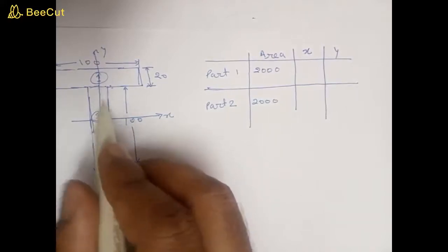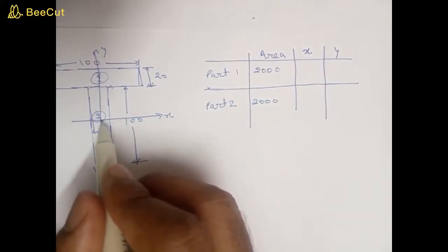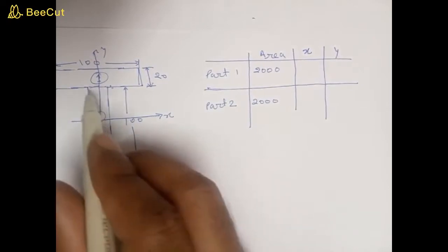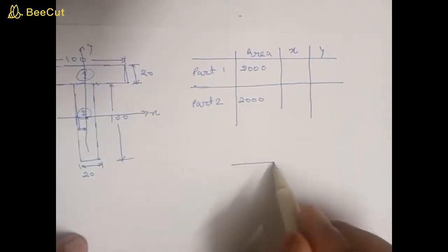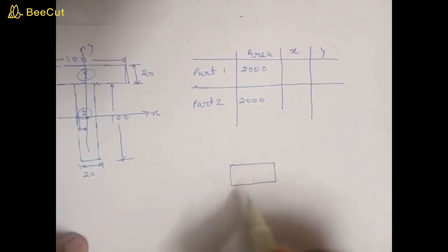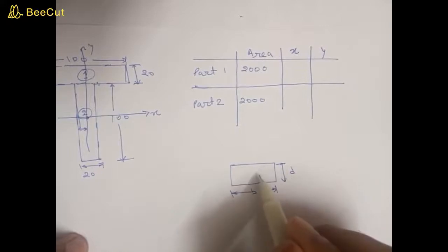So x-coordinate of the centroid of part two—this is a rectangle, suppose this is a rectangle with breadth b and height d—then its centroid will be at b by 2 and d by 2 from here.